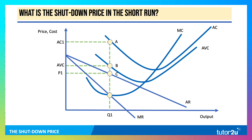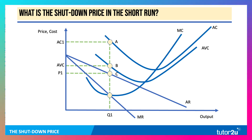AC is the loss per unit if they continue, whereas if they shut down, they only lose the fixed cost, so the loss per unit would be AB. So if price is below average variable cost, in theory firms may shut down.